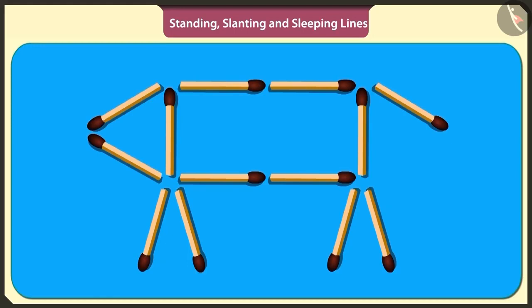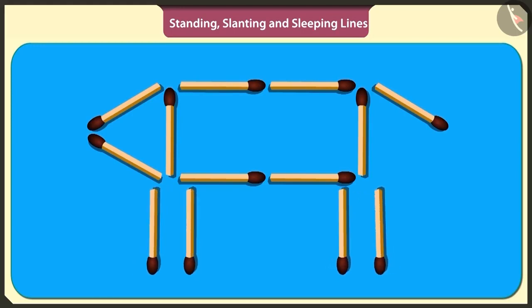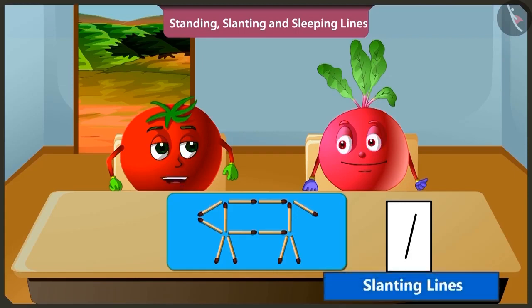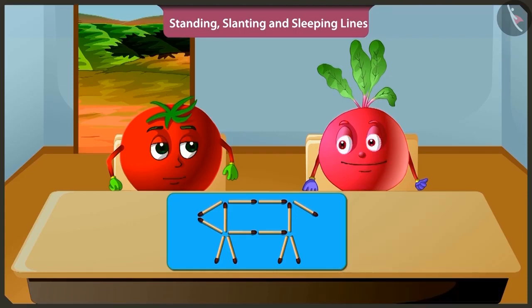Hey. To make the legs of the dog, the matchsticks are not standing but slanting. Hmm. I didn't understand. Bittu, even if the line is slightly oblique, it is called slanting. Yes. Understood. But where is the game?